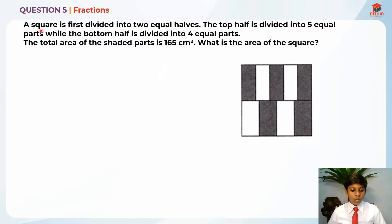A square is first divided into 2 equal halves. So this is one half and this is the another half. The top half is divided into 5 equal parts while the bottom half is divided into 4 equal parts. So this is the top half and this is the bottom half. The total area of the shaded parts is 165 cm². What is the area of the square?